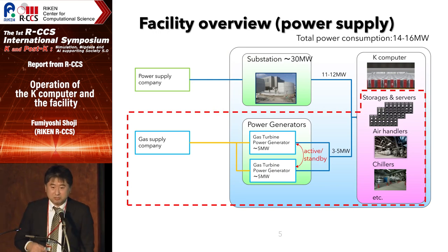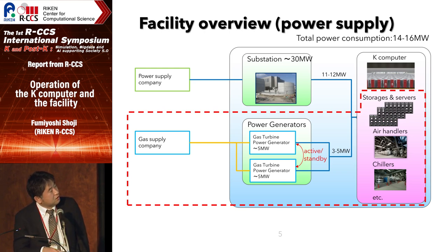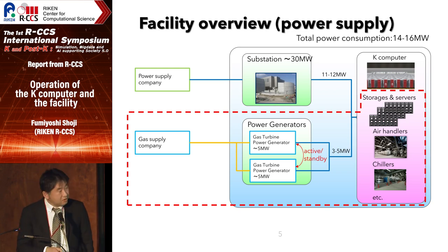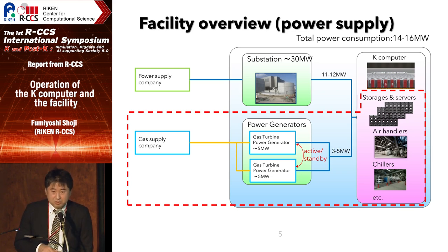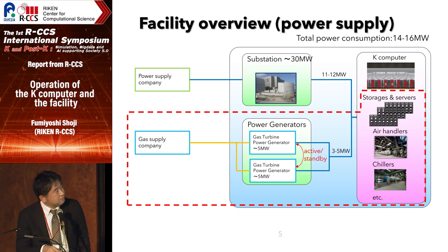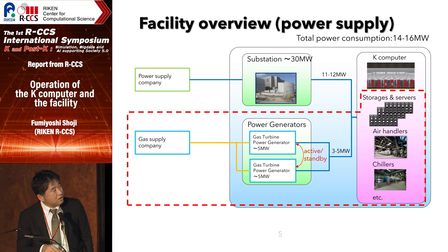I will now show you the facility of this site. We have two power paths to the power supply company. About two-thirds of the total power consumption comes from the power supplier, and one-third is generated by our own gas power generators. These power generators can generate electricity up to five megawatts, and they also work as backup power sources for the storage systems, but not for the K-Computer itself.